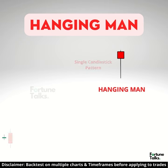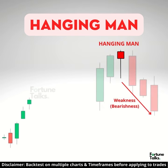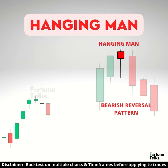The Hanging Man candlestick is a single candlestick pattern that, if formed at the end of an uptrend, indicates weakness in further price movement. It is a bearish reversal pattern, which signals that the uptrend is going to end.